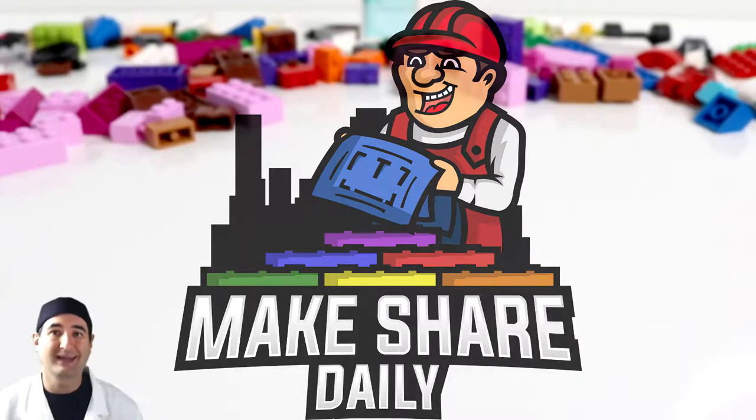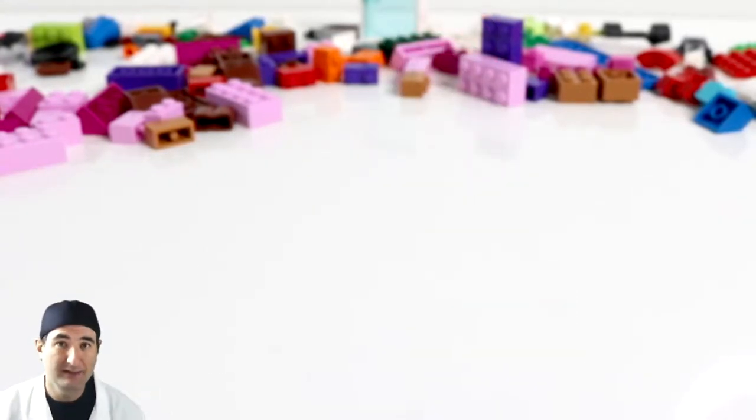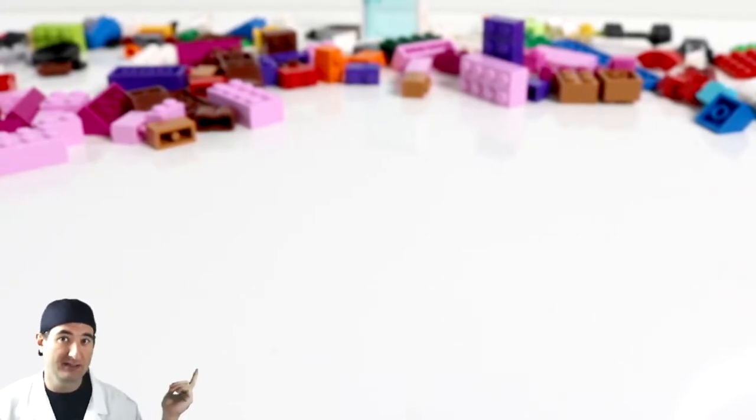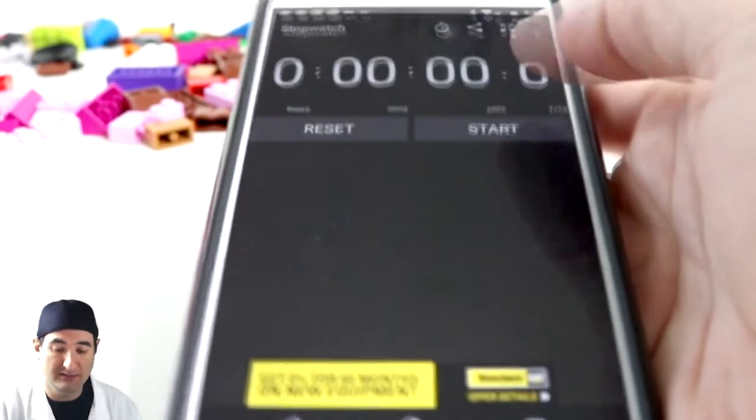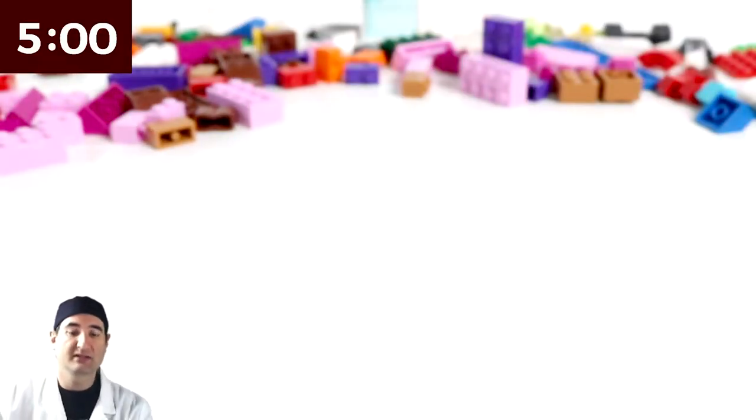So a donkey, I have to go make a donkey with only 221 pieces. I didn't do a good job with the dog. Let's see what I can do with a donkey. Put five minutes on the clock and let's get to it.